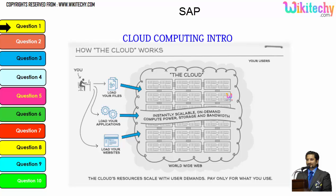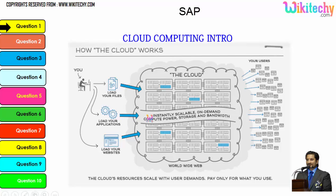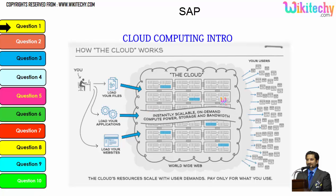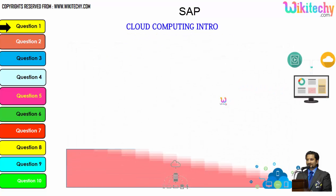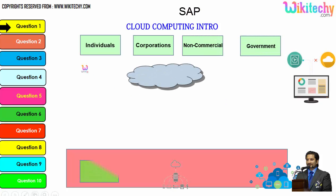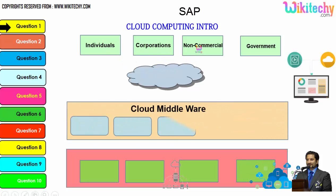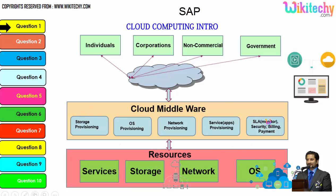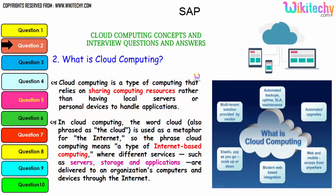There is a huge burden taken off from companies and end users, given to the service providers via the cloud. Cloud computing is like renting servers or services. You can load files, load applications, or host your website so any user can access it. Tracking and monitoring becomes really easy. There are different types of users — individuals, corporations, non-commercial people, and government — all able to access services, storage, networks, or operating systems via cloud middleware.